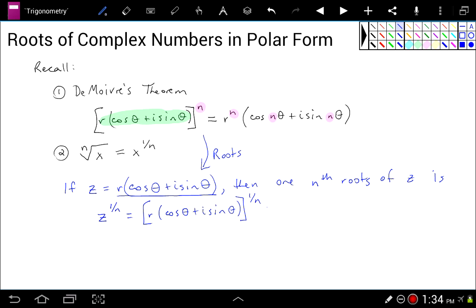And finally, applying DeMoivre's theorem, I would change all my n's in DeMoivre's theorem to 1 over n's. So now I'll have r to the 1 over n times cosine of 1 over n times theta plus i times the sine of 1 over n times theta. And so all I've done is replaced all the n's from DeMoivre's theorem above, all the purple pieces, with 1 over n's because I want the roots now.